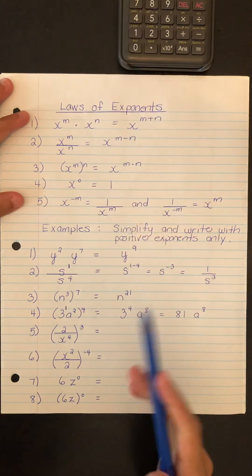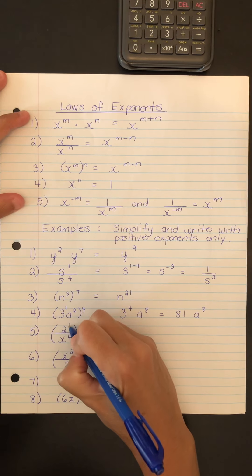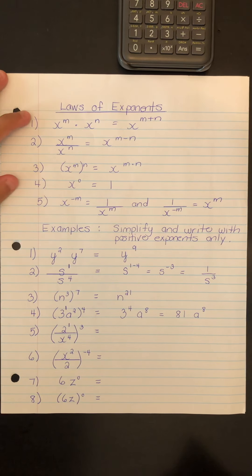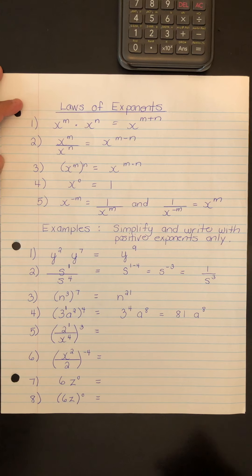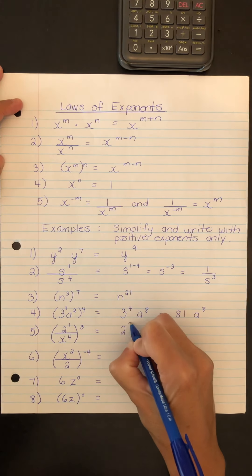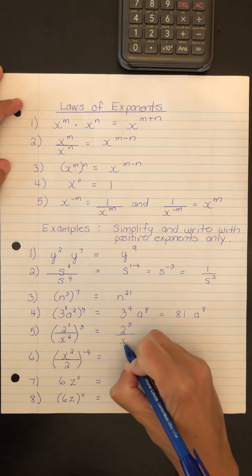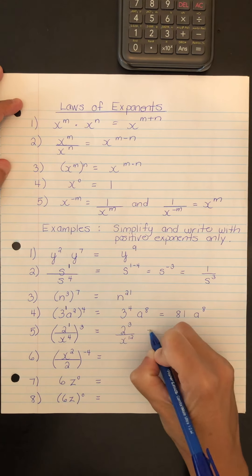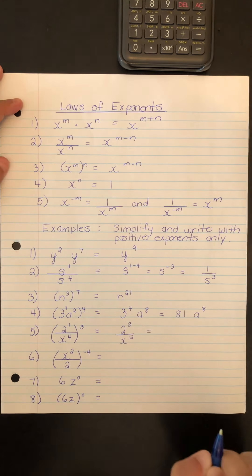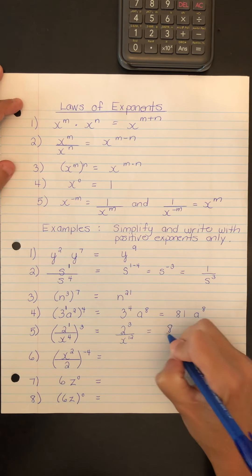In question 5, don't forget the implied exponent. Applying rule 3, this becomes 2 cubed over x to the 12. And 2 cubed means 2 times 2 times 2, which equals 8.